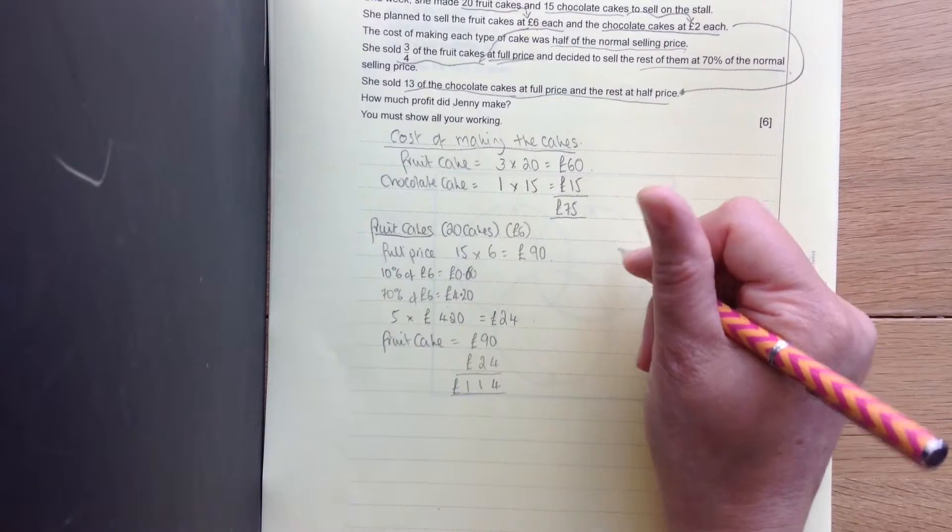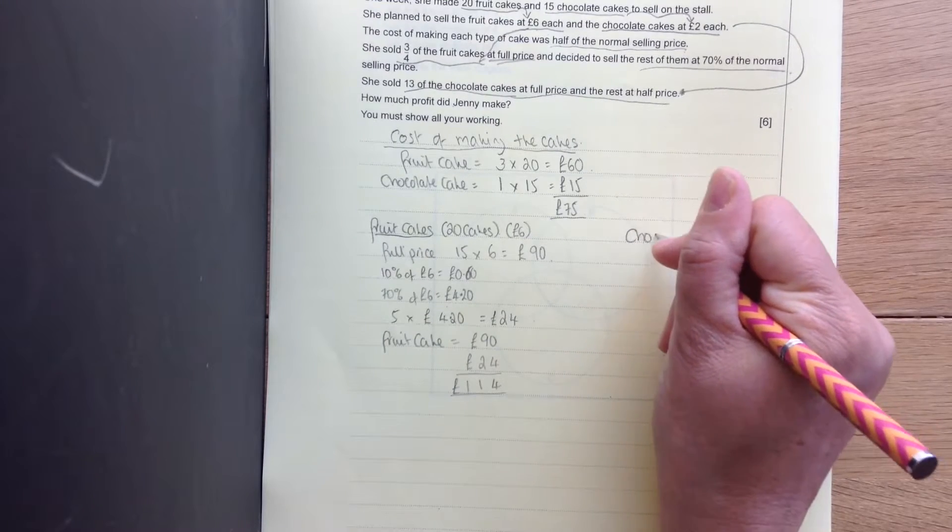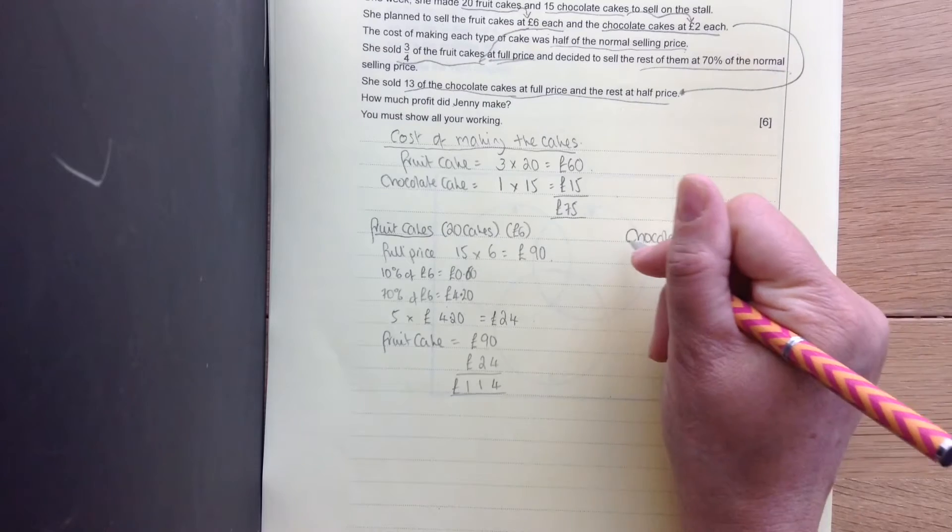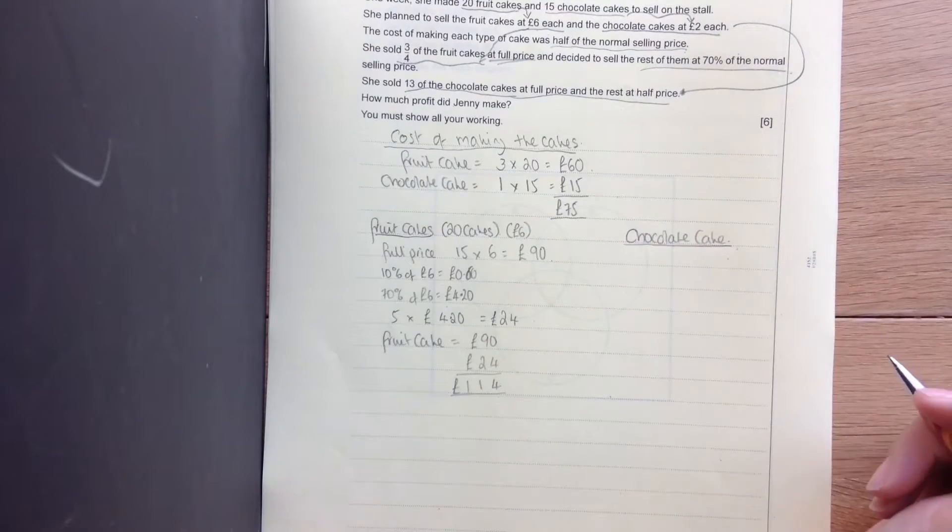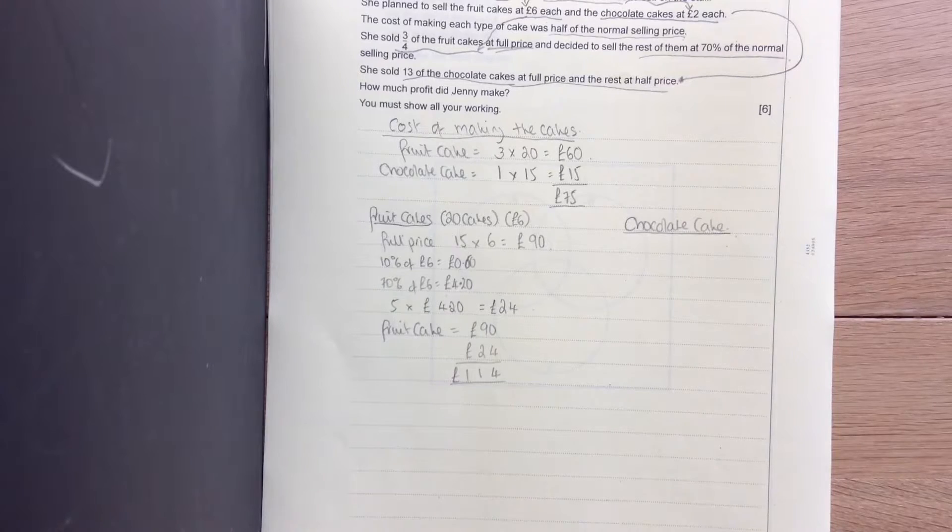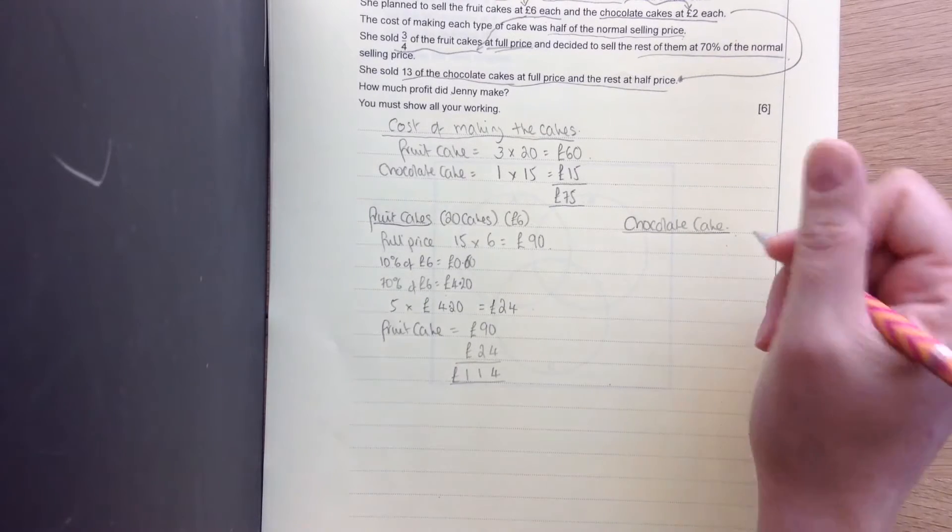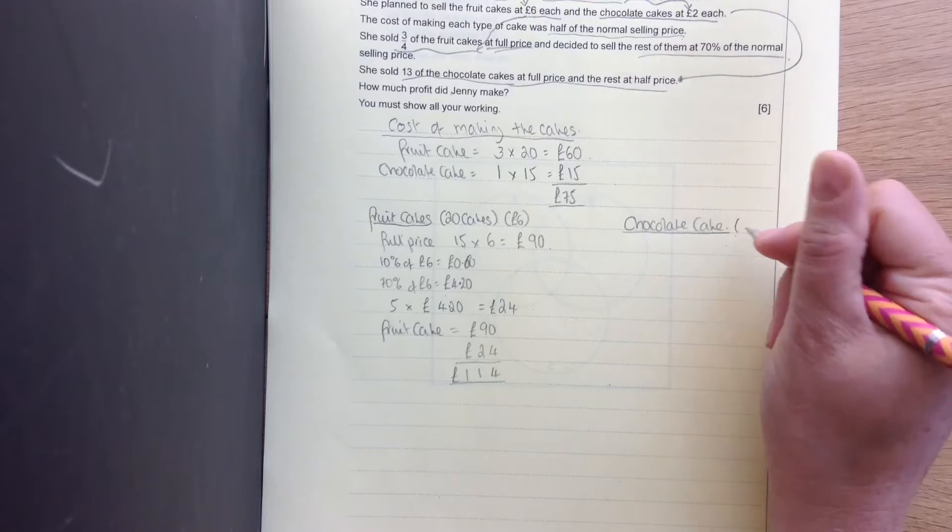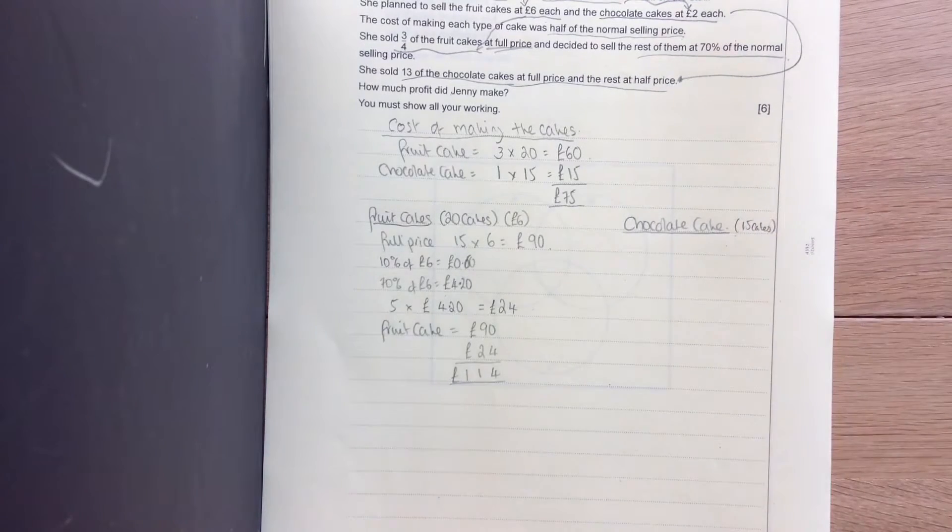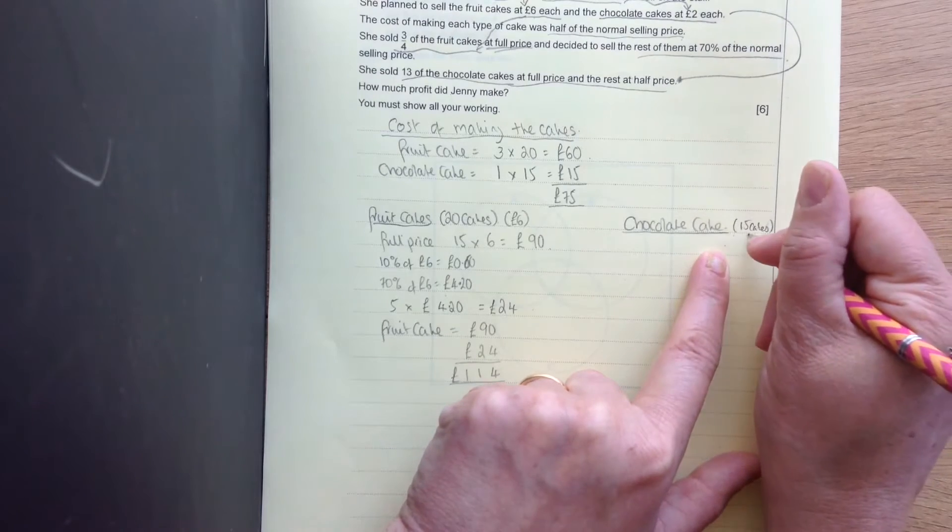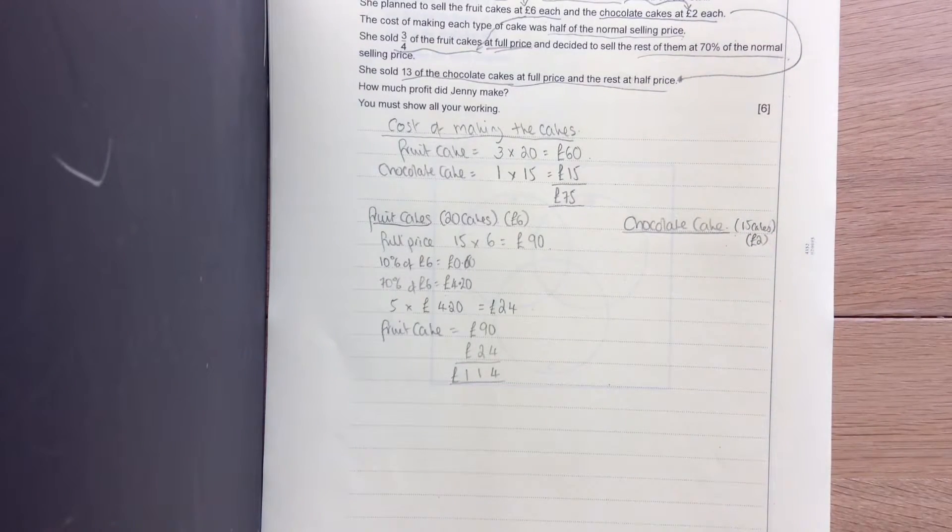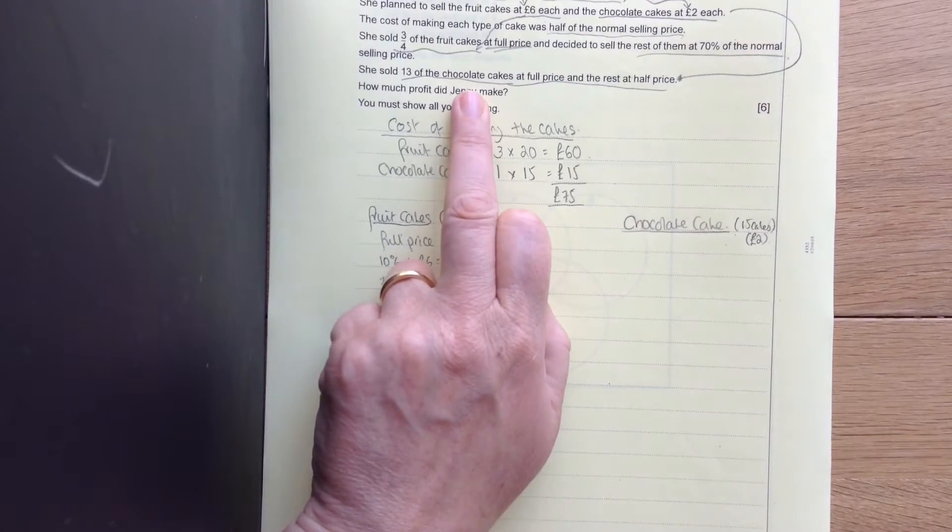Now let's look at the chocolate cake. And the chocolate cake, it says that she sold 13 of them at full price and the rest at half price. So remember now, they were 15 cakes and they were £2 each. I'll put that information there so I know what I'm doing. 13 chocolate cakes at full price.